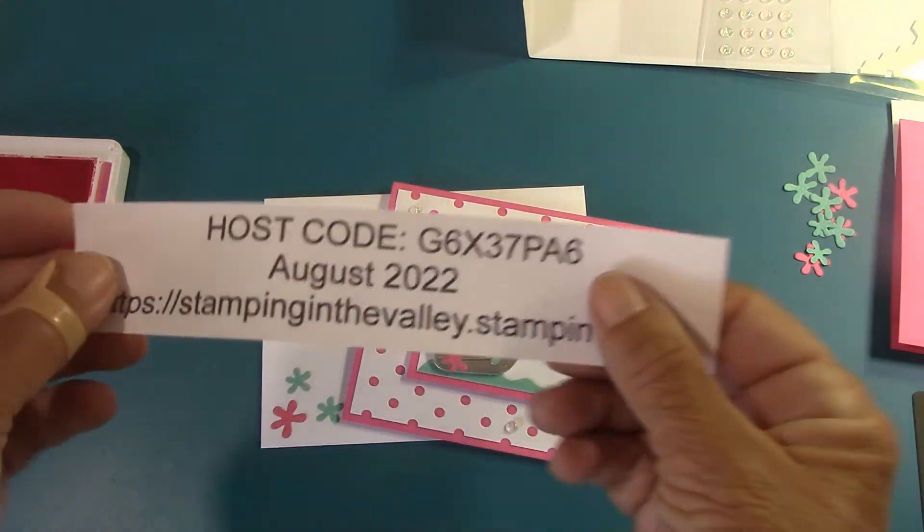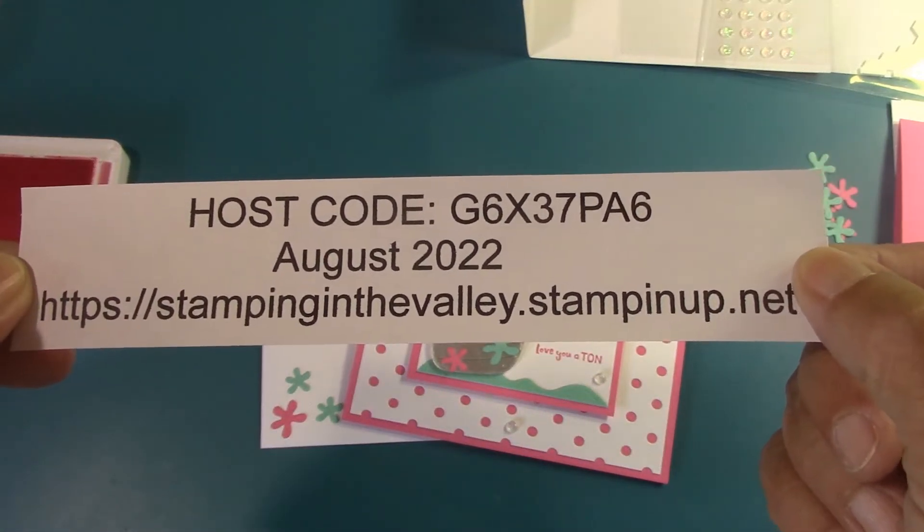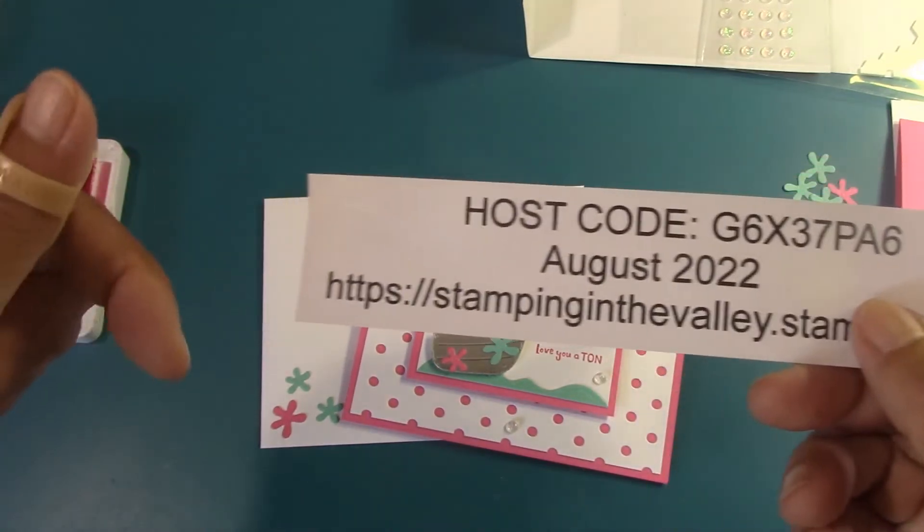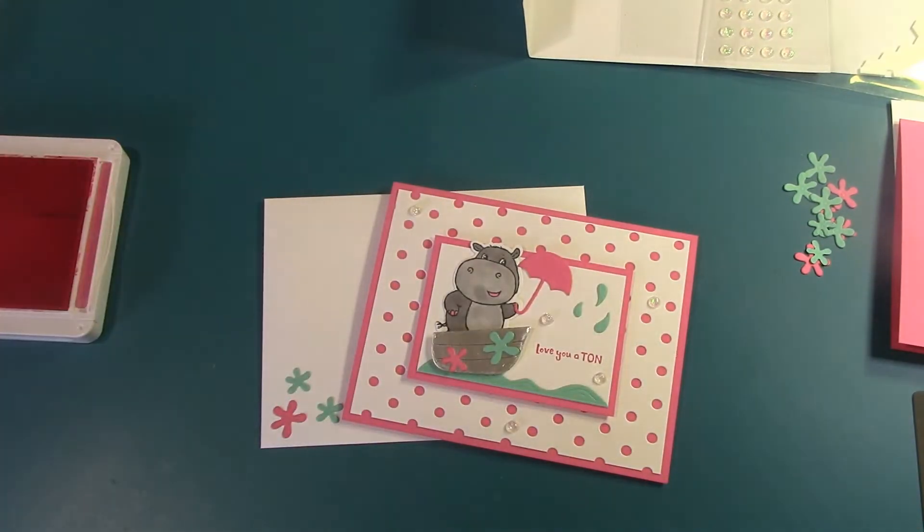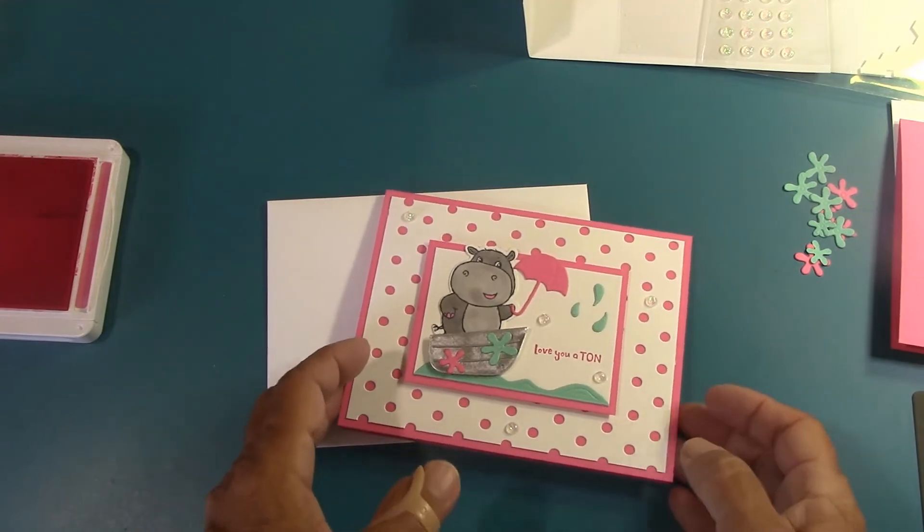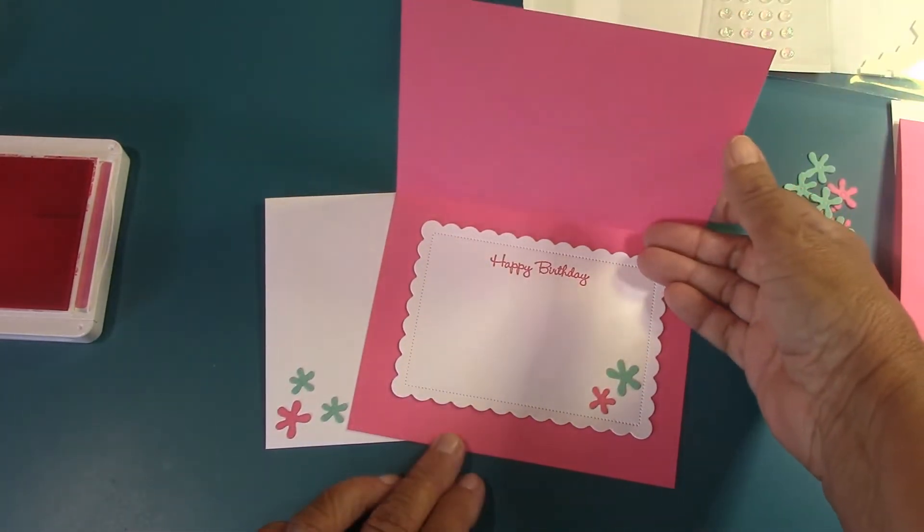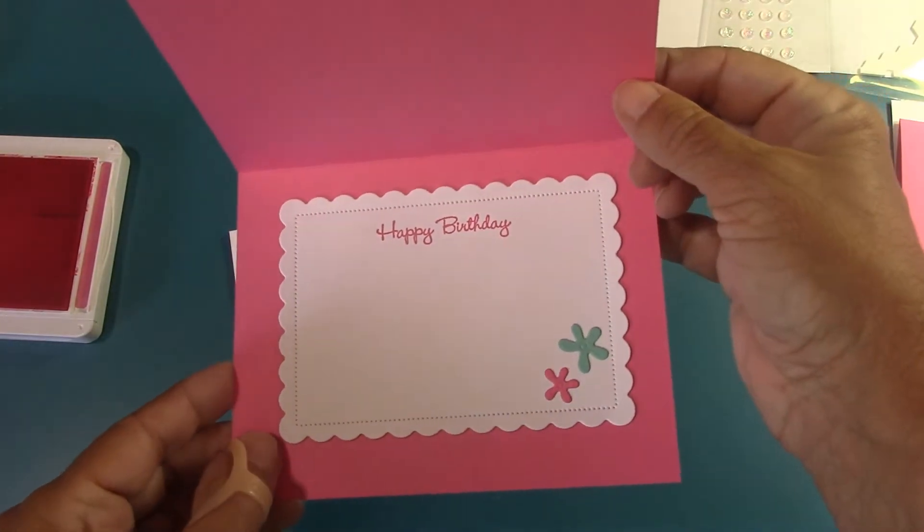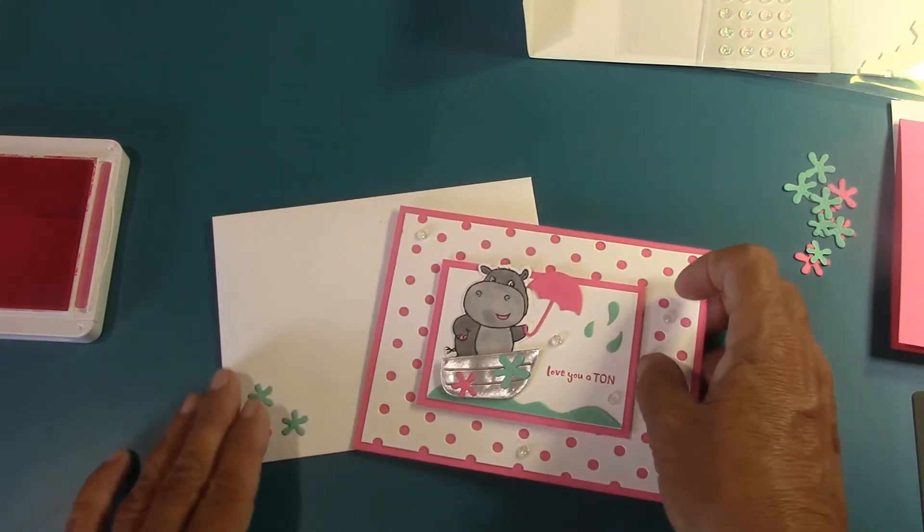Here is my host code for August. If you place an order at stampinginthevalley.stampinup.net. There is a link below to my online store. Just click it and it will take you right there so you can place your order. I am using polished pink. My base is polished pink, 8.5 x 5.5, scored at 4.25. The inside I used the scallop contour. I loved the way that it scalloped because it reminded me of this little wave here. So I kind of wanted to pick up that little vibe with that.